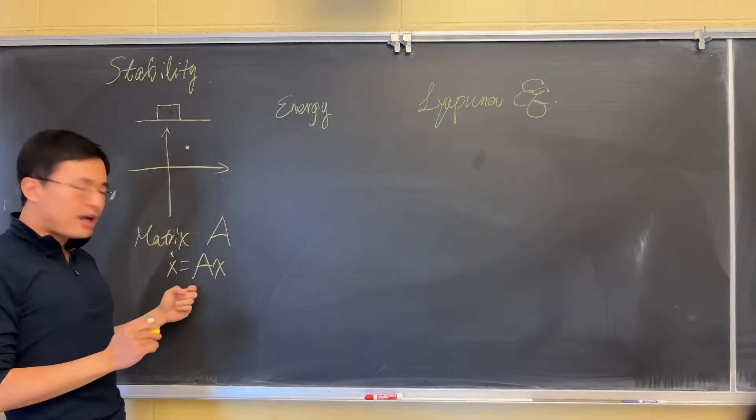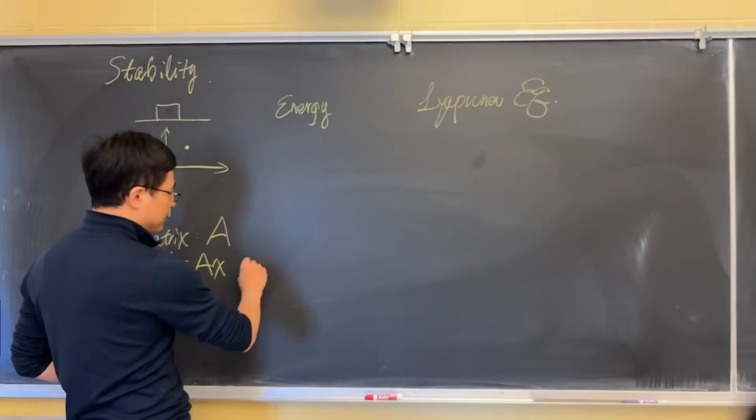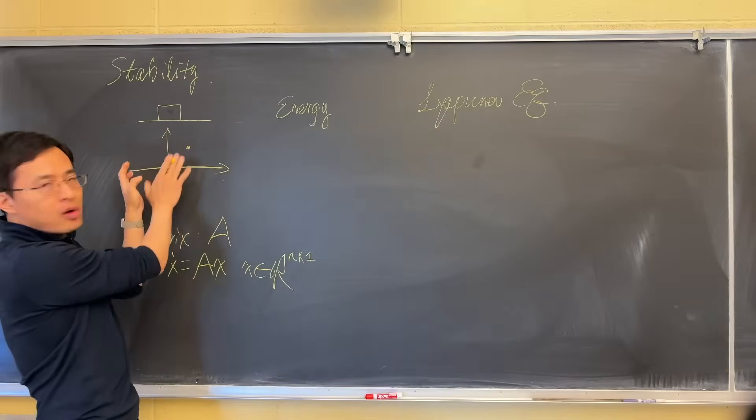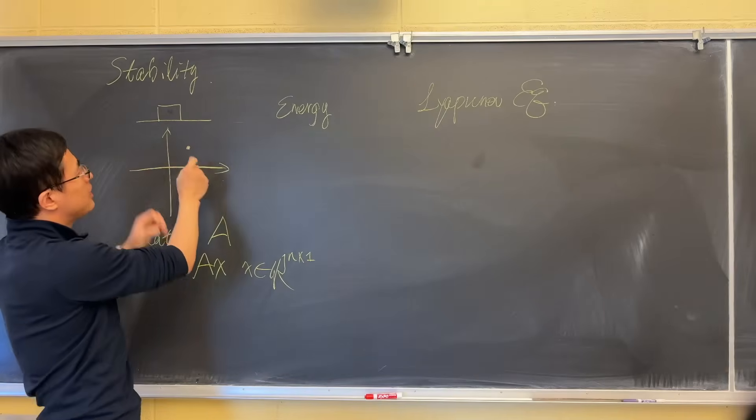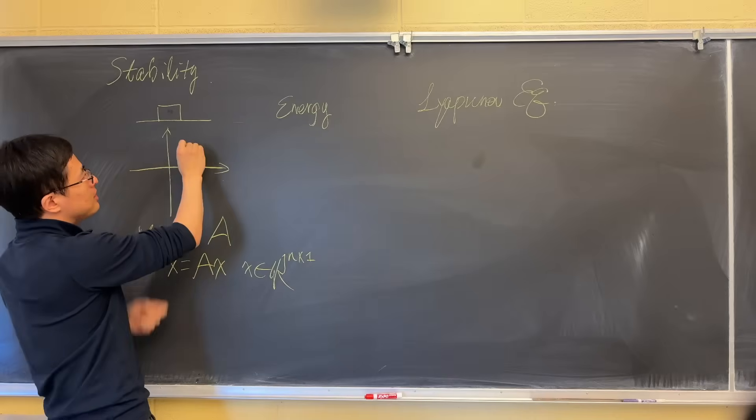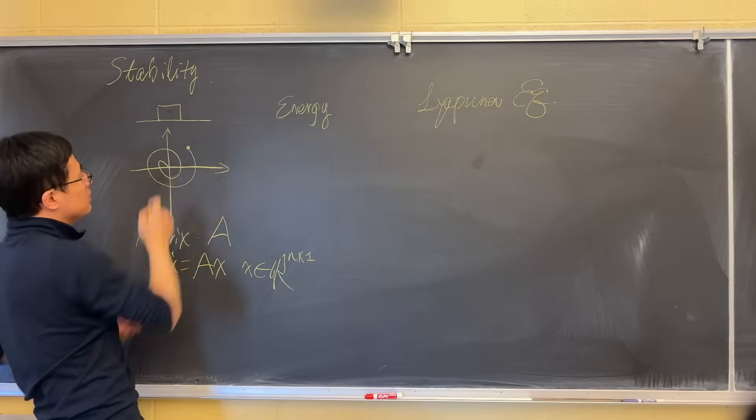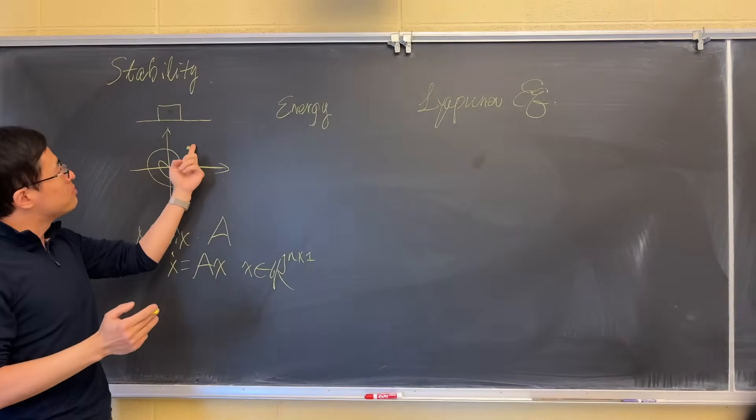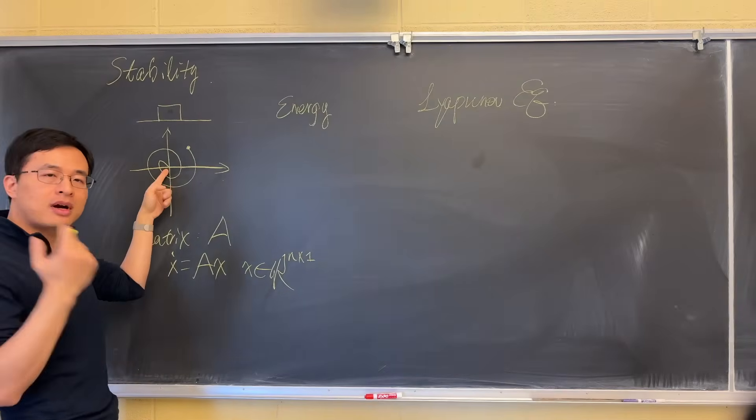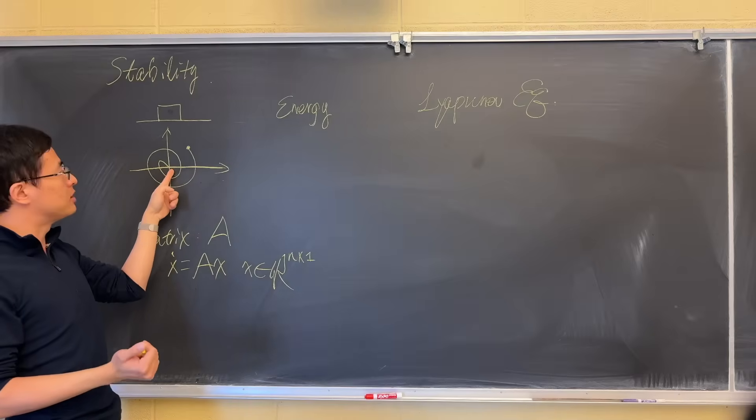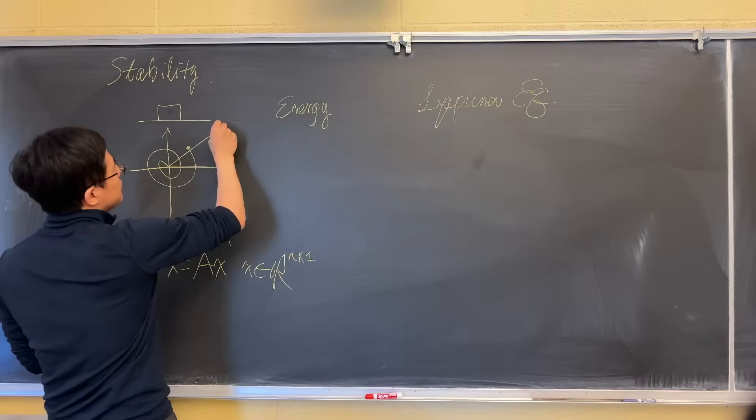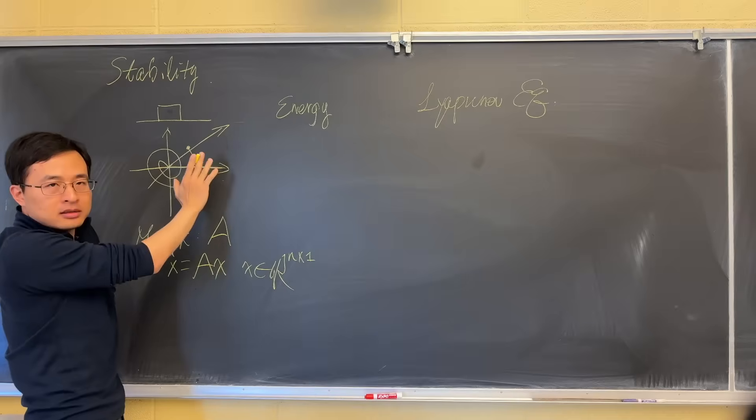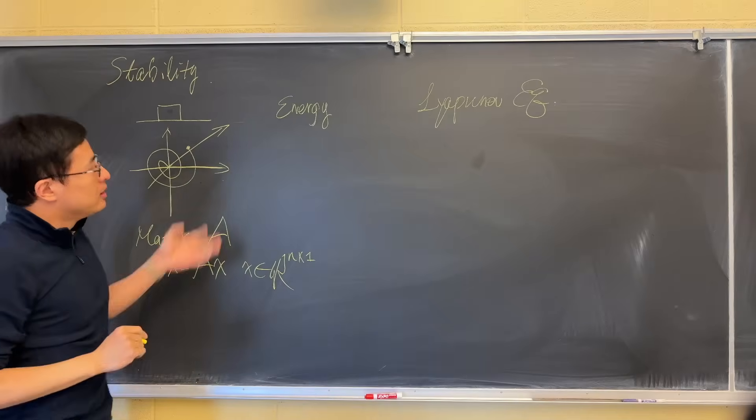Then we started thinking about more complex systems where your state vector x is a vector, so you have many more degrees of freedom compared to the single point mass case. For example, if it's in a two-dimensional space, then your point can move in this plane. A very strong stability concept is that motion is going to converge to the origin. This is asymptotic stability.